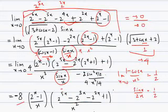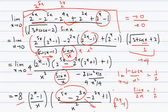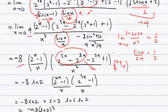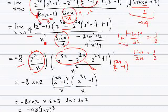The remaining part can be further factorized: we take 2 to the power 3x common, leaving 2 to the power 2x minus 1. Both terms now share (2^2x - 1), so we take that common, and the leftover is (2^3x - 1). We now have x cubed in the denominator, so we use one x with each exponential factor — dividing and multiplying by 1, 2, and 3 respectively — so each factor like (2^x - 1)/x approaches log 2.